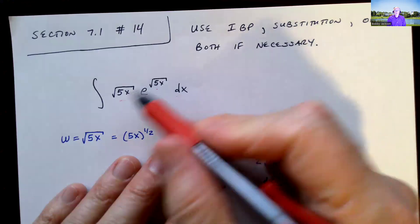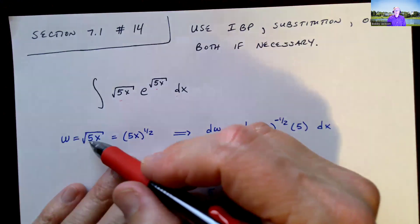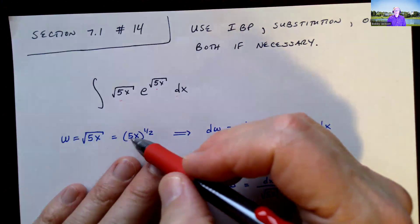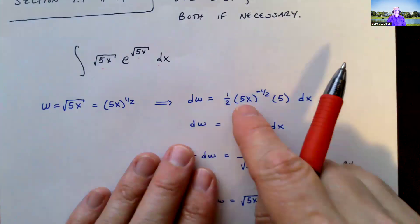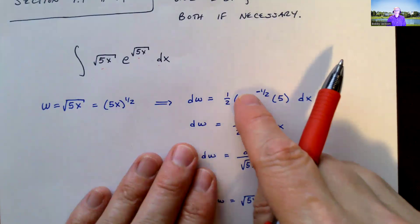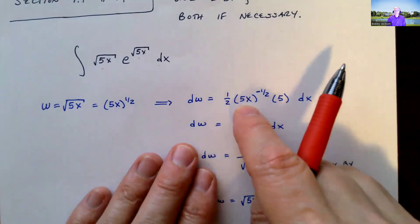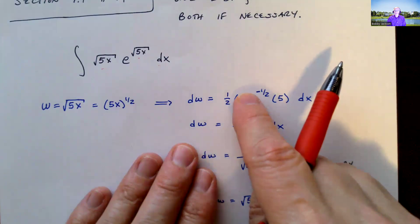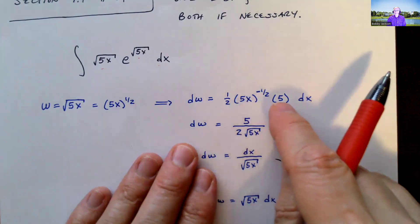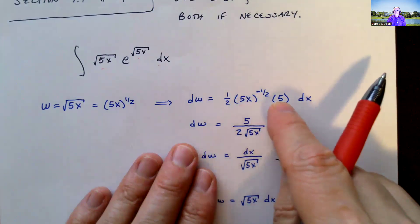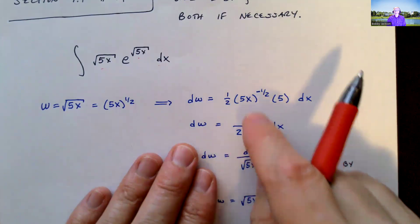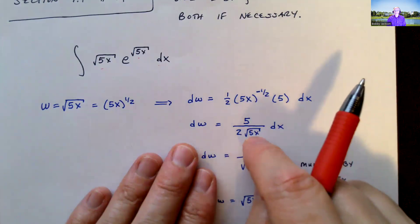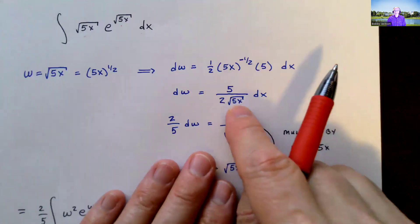So I'm going to let w equal the square root of 5x, which is the same as 5x to the one-half power. Taking the derivative by the chain rule: the derivative of the outer function is one-half times 5x to the negative one-half, times the derivative of the inner function which is five. Cleaning that up, I get five over two times 5x to the negative one-half, which is five over two divided by the square root of 5x.